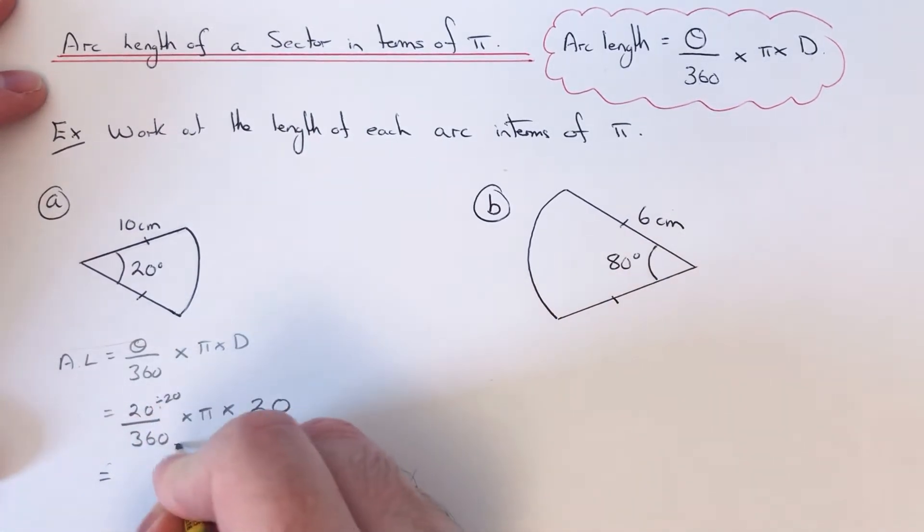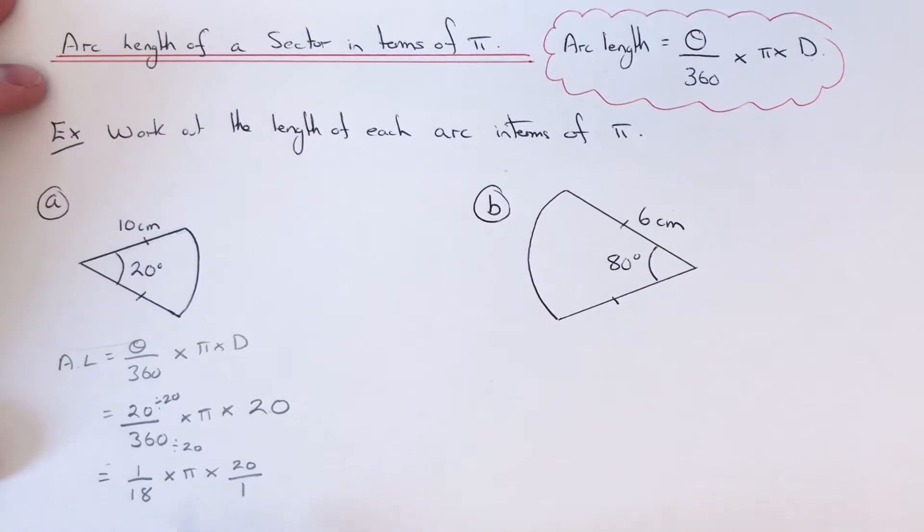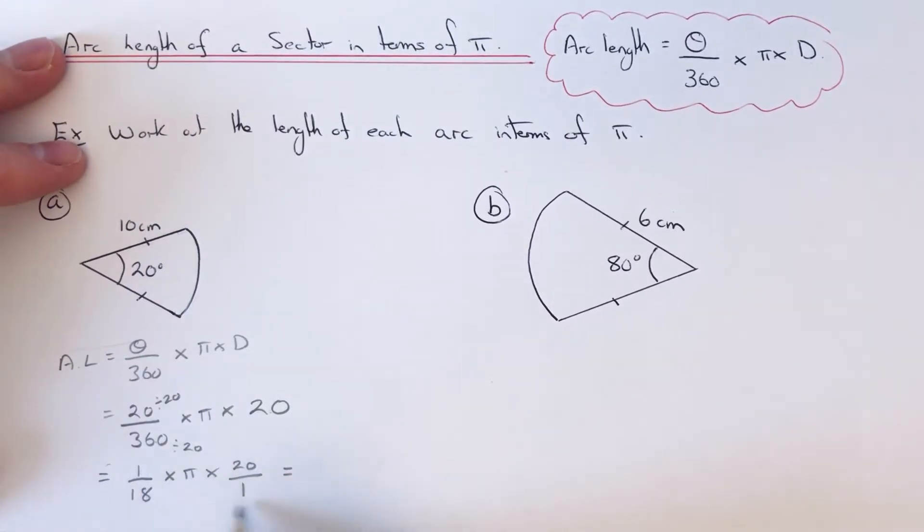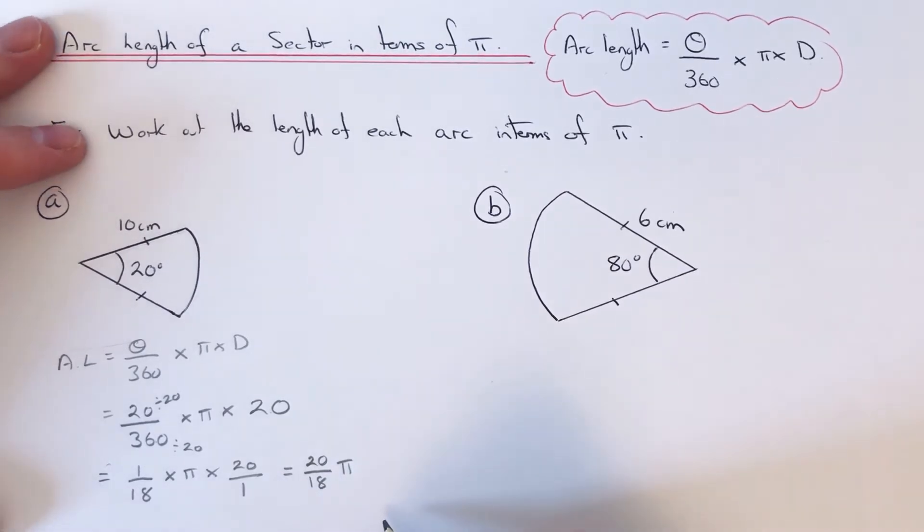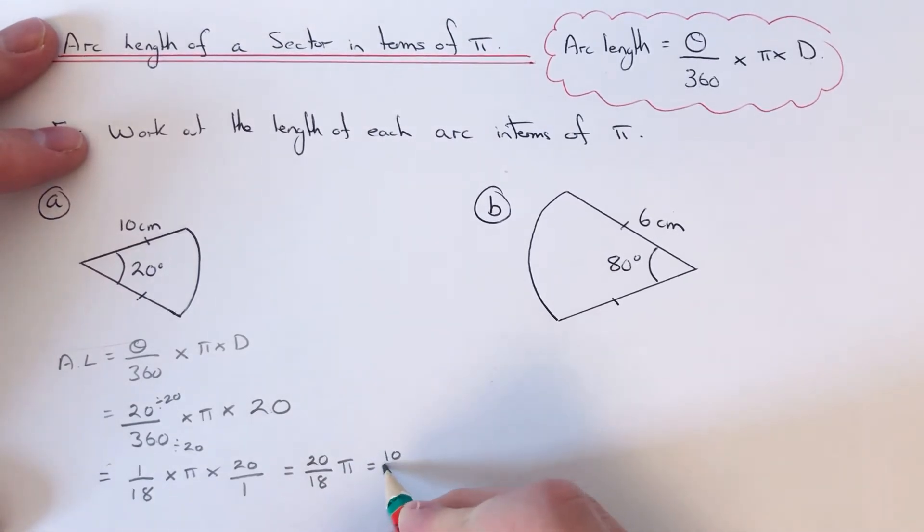The numerator and denominator are both multiples of 20, so we can write that as 1/18. We can write 20 as a fraction as 20/1. Then multiply these two fractions together: 1 × 20 = 20, 18 × 1 = 18, and put the π on at the end. We can simplify this fraction again by dividing by 2, which gives us 10/9 π. That is our final answer.